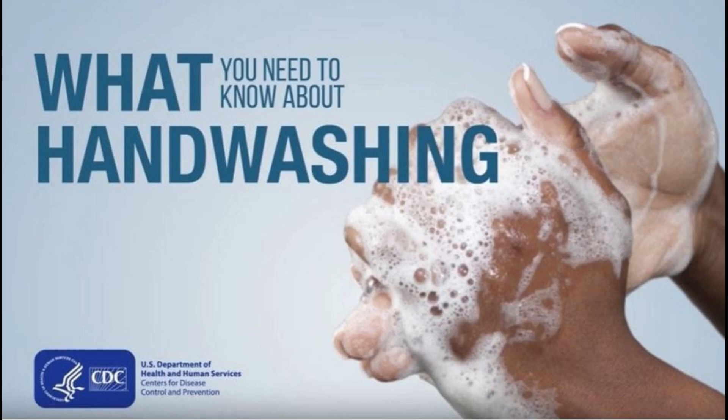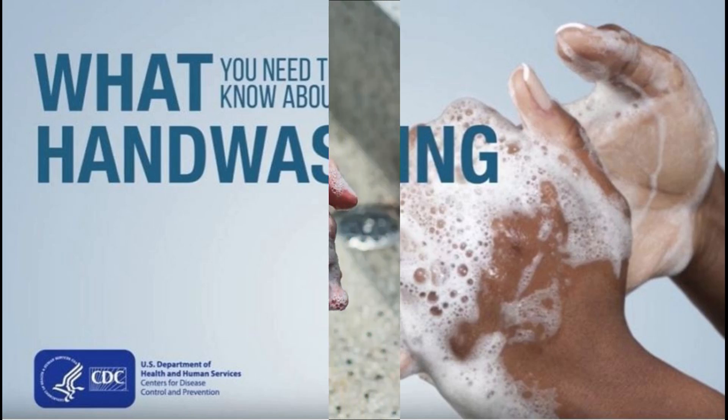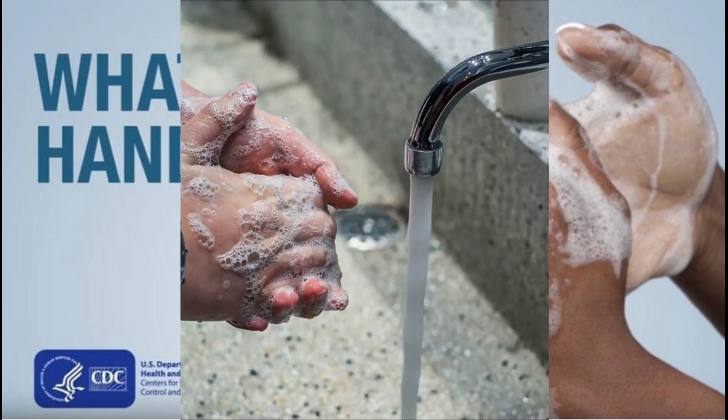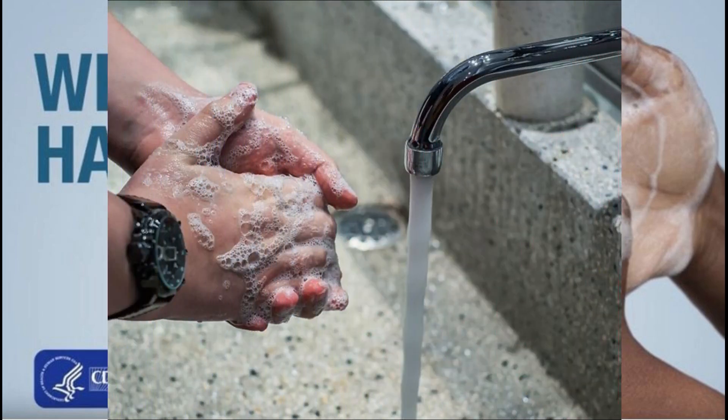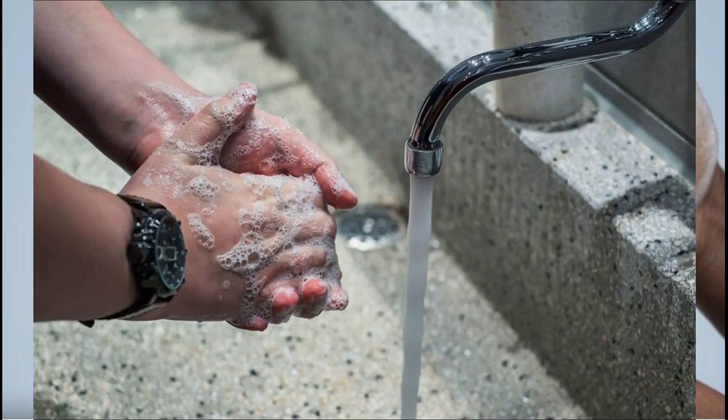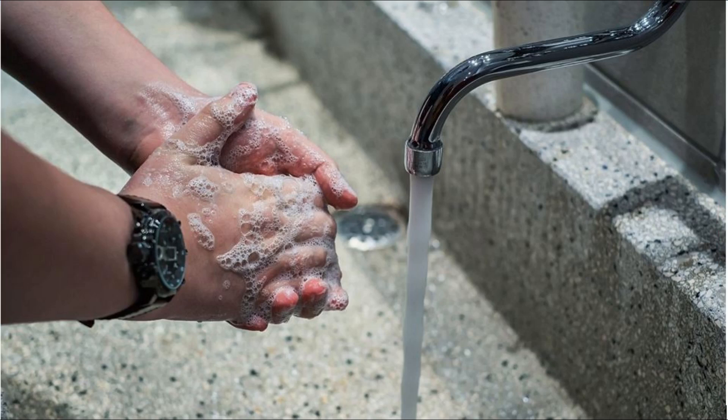The five critical times include: after using the toilet for urination, defecation, or menstrual hygiene; after cleaning a child's bottom or changing diapers; before feeding a child; before eating; and before or after preparing food or handling raw meat, fish, or poultry.